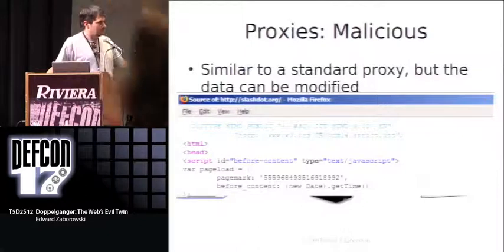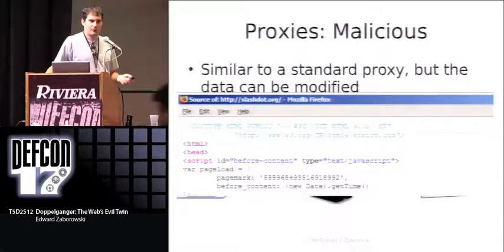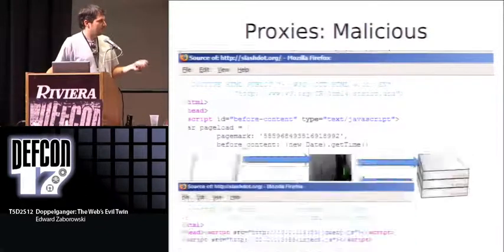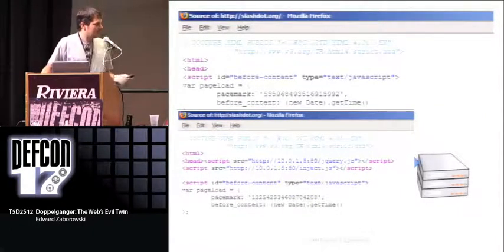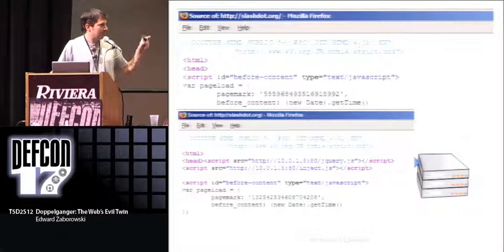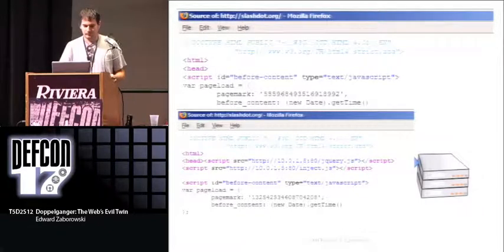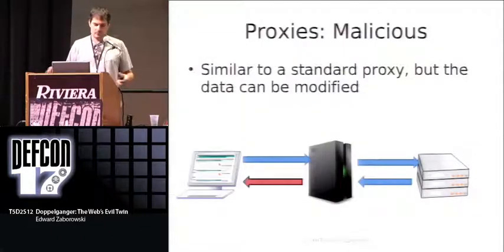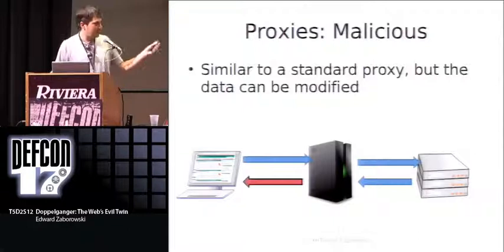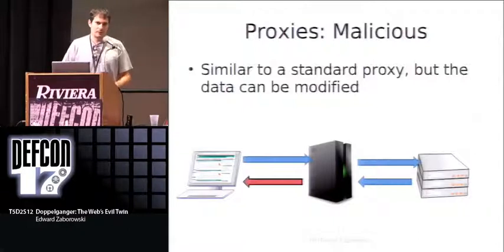Here's a screenshot of an excerpt of Slashdot before and after it's modified. On the bottom screen you can see a couple of elements being added onto the page, inserting some JavaScript. That JavaScript, as the page has been modified by the proxy, is then passed right back to the client where it's rendered with the modifications you made to it.